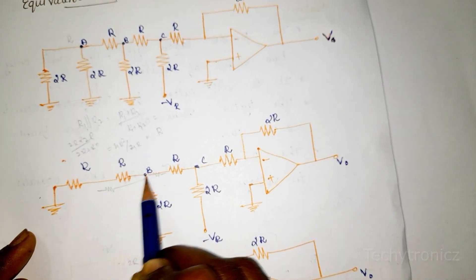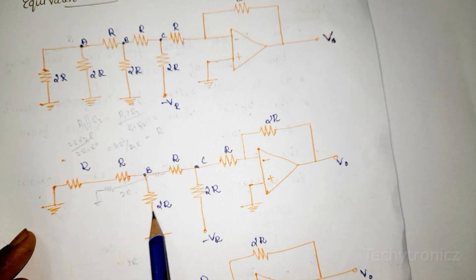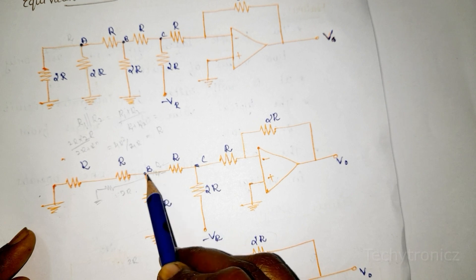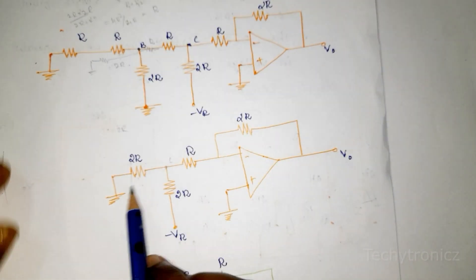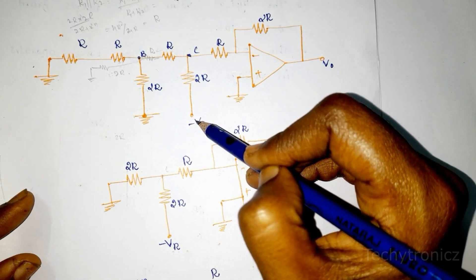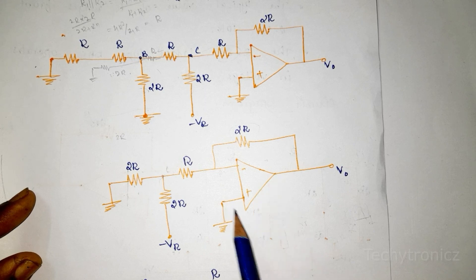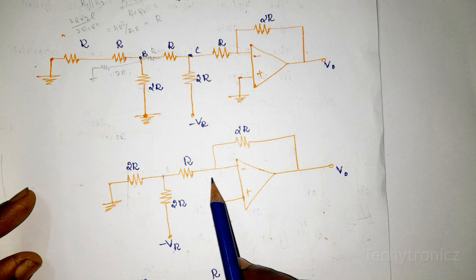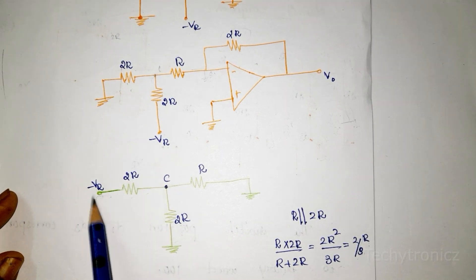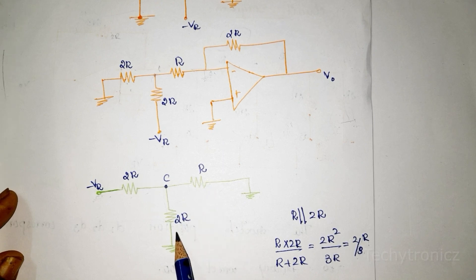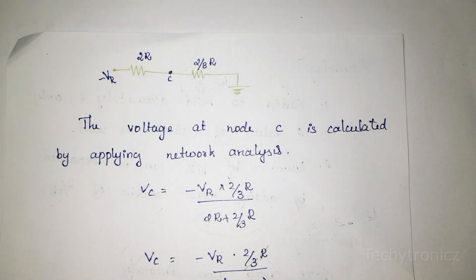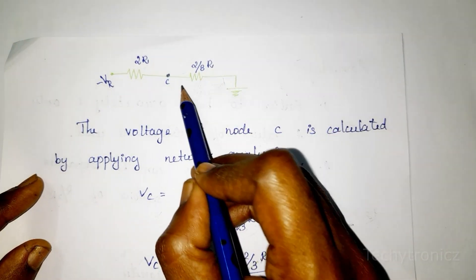The resulting 2R is at node A. This is not a simple parallel connection because one resistance end is connected to ground and the other is connected to reference voltage VR. Looking at the op-amp, this is the virtual ground, so the inverting input node is also at ground. Rearranging, minus VR is the source, and 2R in parallel with R gives 2R/3. We are then calculating the voltage drop Vc across the 2R/3 resistance.